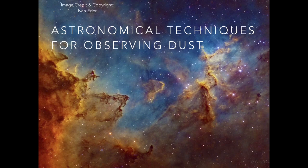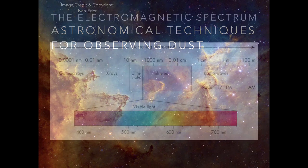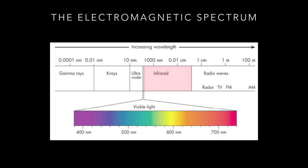Before getting into more detail about interstellar dust, I want to make a few points about how we observe it. The key point for most of astronomy is that all you really have is light — I'll mention one exception — but for the most part, all we can do is observe light coming from these objects and try to interpret what it's telling us.